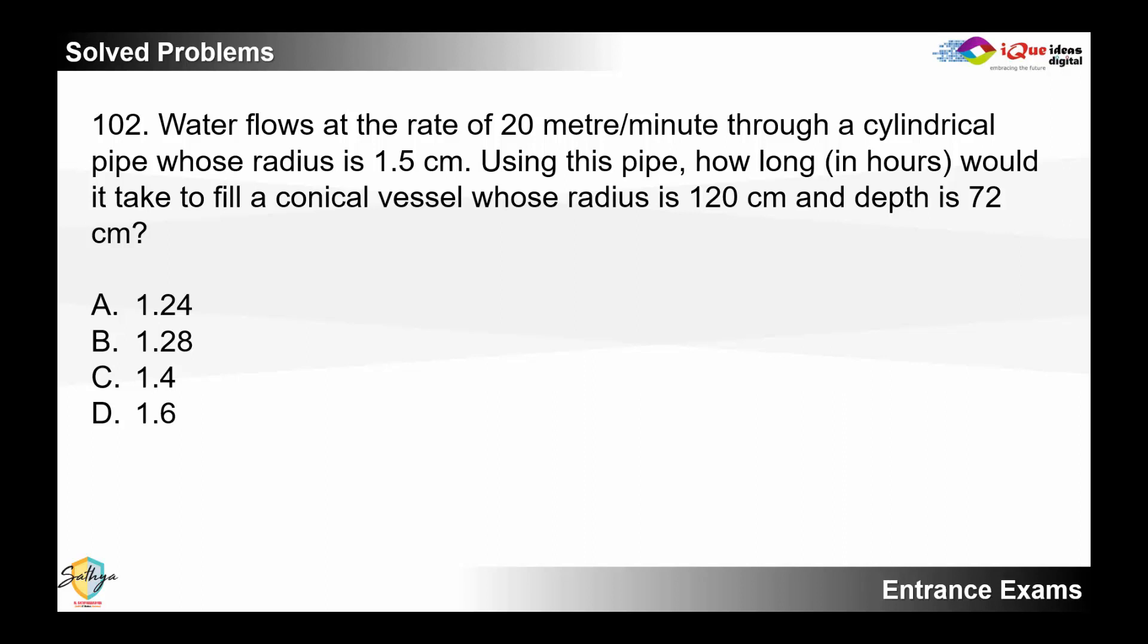Now in such cases I just need to understand and identify the volume of each object. In this particular example I've got two different shapes, one is a cone and a pipe is normally considered as a cylinder.